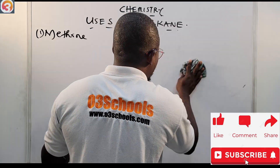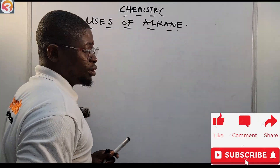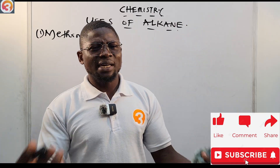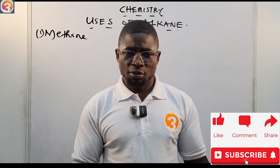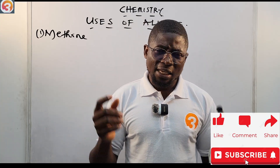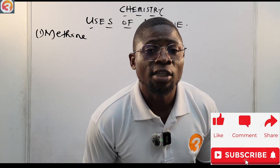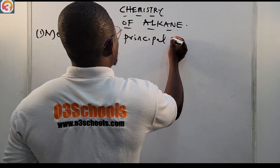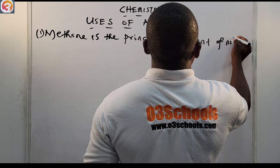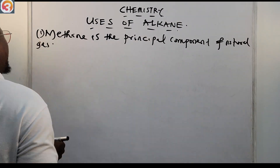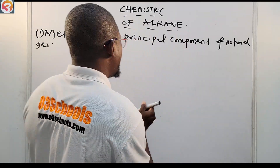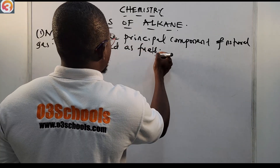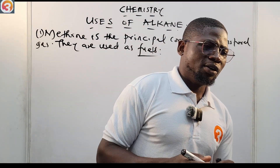So methane is the principal component of natural gas, and because alkanes like methane can undergo combustion to release a lot of heat, they are used as fuels — both industrially and domestically. That is the answer to the past question we previewed: the major use of alkanes is as domestic and industrial fuels.